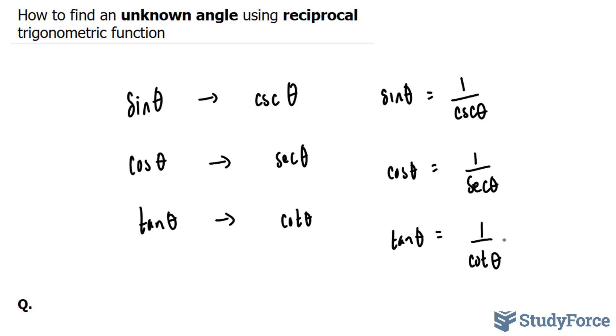And similarly, and this is probably the way you've seen it written before, cosecant is equal to one over sine theta. Secant is equal to one over cosine. And lastly, cotangent theta is equal to one over tangent.